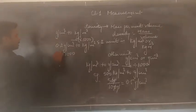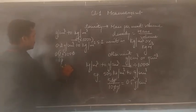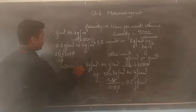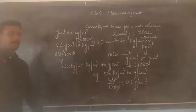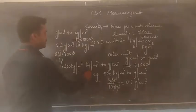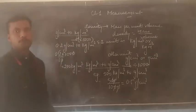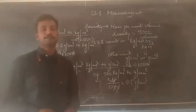After cancelling, you can see the answer is 200 kg per meter cube. So this is how we can convert kg per meter cube to gram per centimeter cube, and also gram per centimeter cube to kg per meter cube.